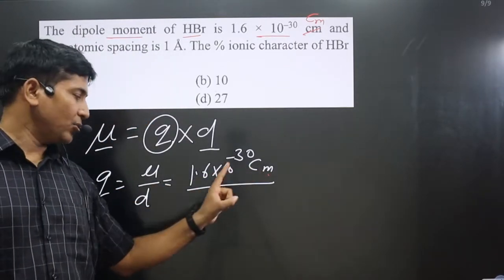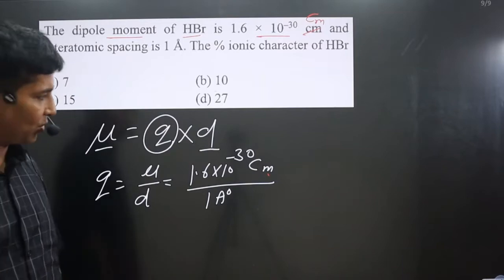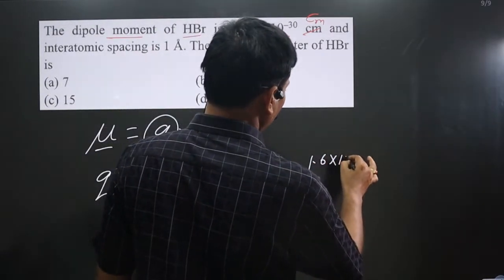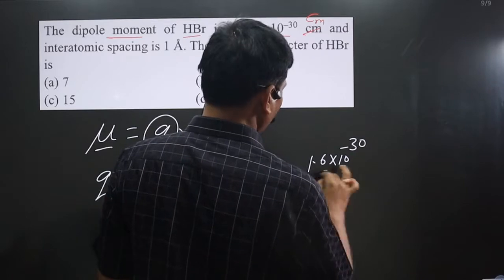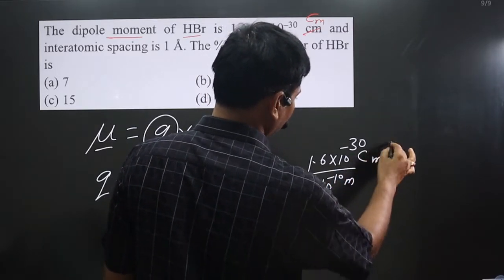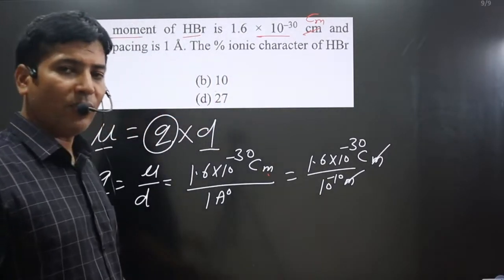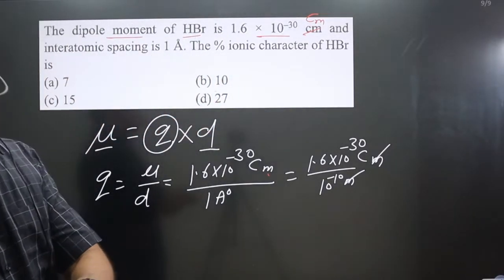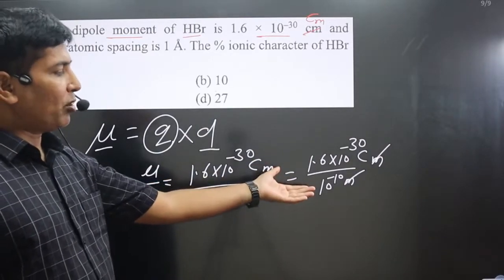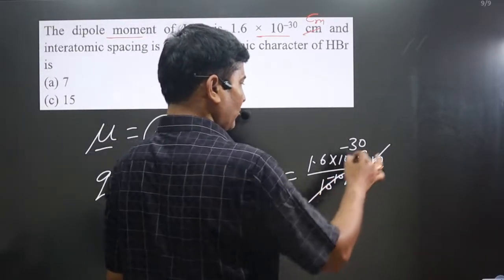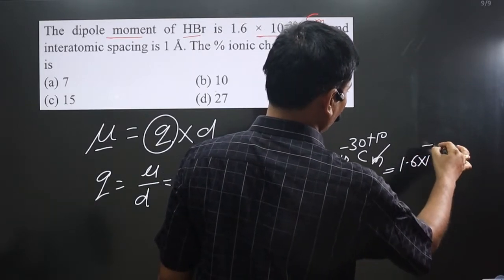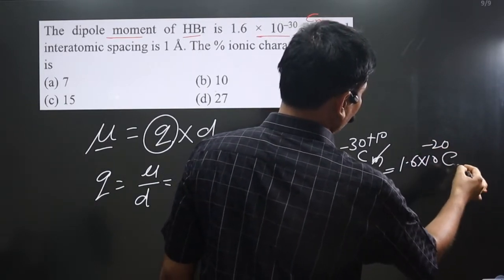The distance is given in meters, so we convert one angstrom into meters. One angstrom equals 10 to the power minus 10 meters. So we have 1.6 multiplied by 10 to the power minus 30 divided by 10 to the power minus 10 meters. The meter units cancel. 10 to the power minus 10 moves to the numerator, becoming plus 10. We get 1.6 multiplied by 10 to the power minus 20 coulombs.